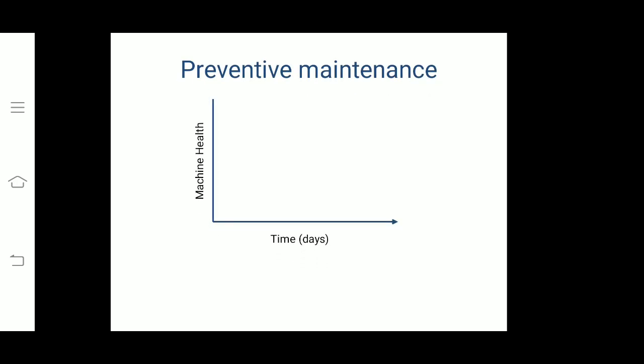In preventive maintenance, we use regular interval checkups on machines. We fix a schedule and do maintenance at particular intervals — monthly, quarterly, after six months, and so on. The big issue with preventive maintenance is determining when to do maintenance, because we don't know exactly when the failure will occur. Since we don't know when the failure will occur, we may do maintenance at an early stage, which directly affects the useful life of the machine.